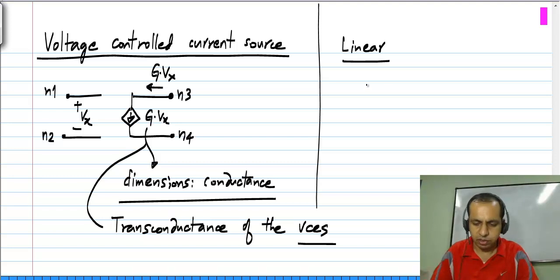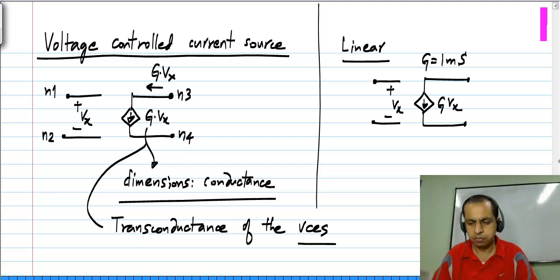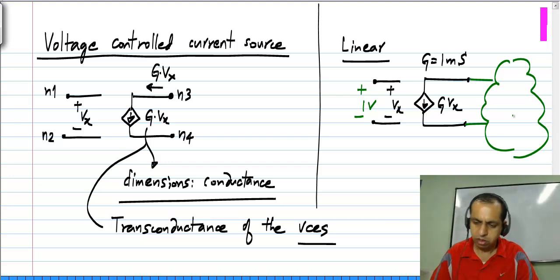Now, what does this mean? Let us say we had a voltage controlled current source given by g equals 1 milli Siemens. It means that if I apply 1 volt on this side and let us say the other side is connected to some circuit, it causes a current of 1 milliamp to flow over there.